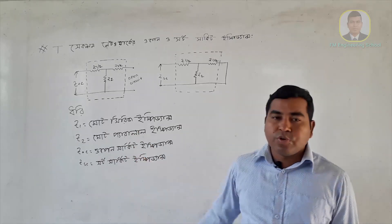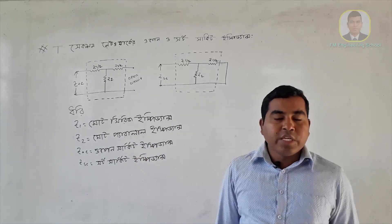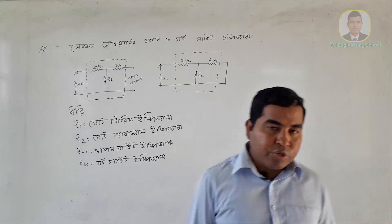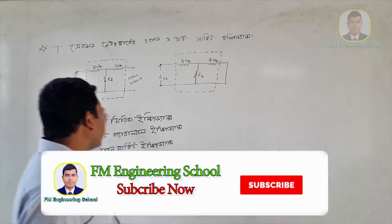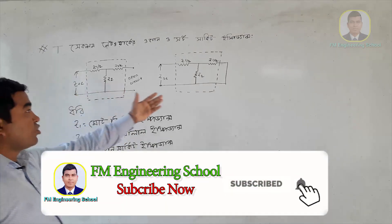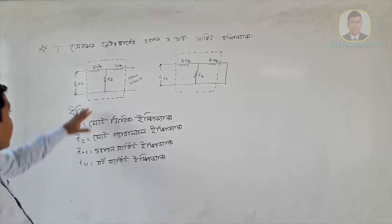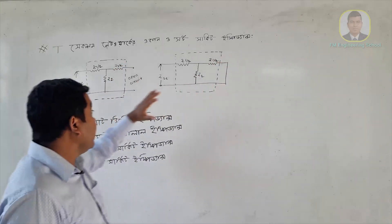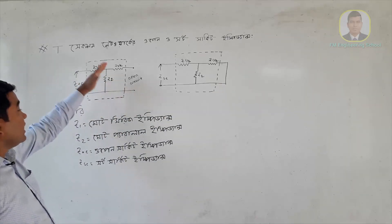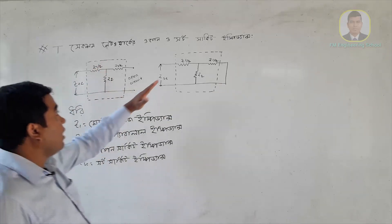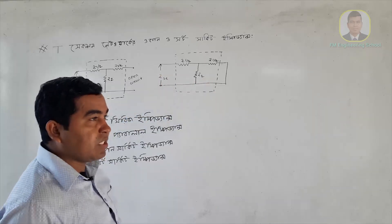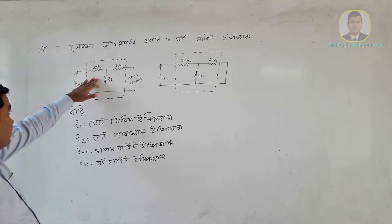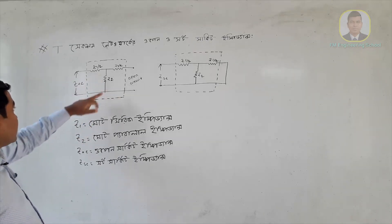I have given the video in the description box; we have linked to our other videos. We have seen the circuit — open circuit and short circuit output. The impedance is Z1 and Z2.